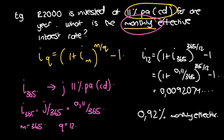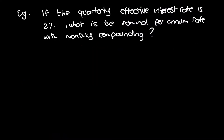One further reminder: whenever you see compounding daily and you want to look at it in compounding monthly, you're going to use this formula. So our next example says: if the quarterly effective interest rate is 2%, what is the nominal per annum rate with monthly compounding?